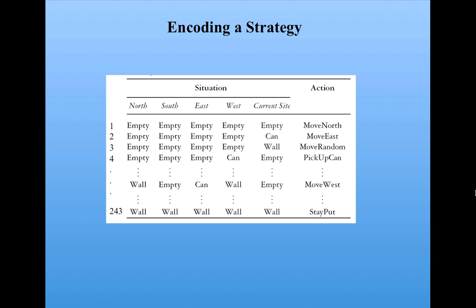In order to evolve strategies with a genetic algorithm, we need to encode them in such a way that the genetic algorithm can deal with them. So here's how this works. Remember, here's our example of a strategy with all possible situations represented, and an action given for each possible situation.